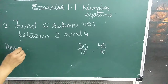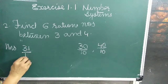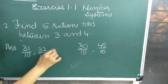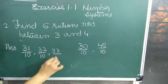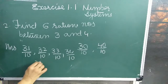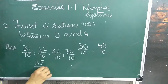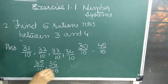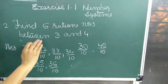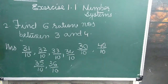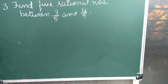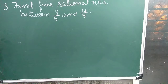So the six rational numbers between 3 and 4 are: 31 upon 10, 32 upon 10, 33 upon 10, 34 upon 10, 35 upon 10, and 36 upon 10.